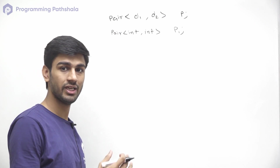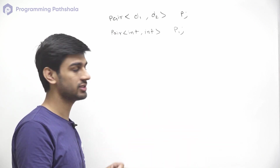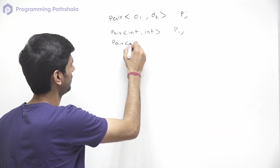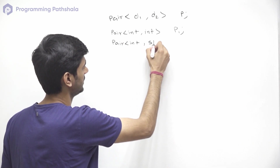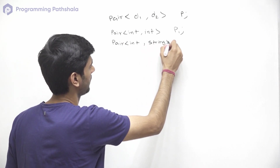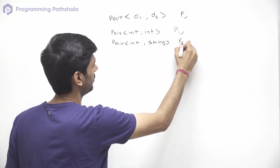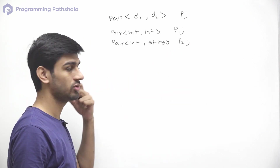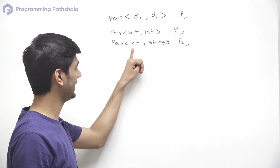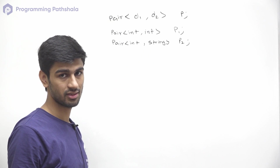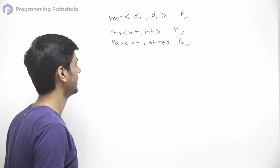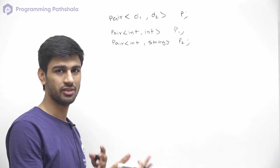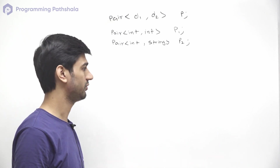If we want a pair of an integer and a string, we can declare that as int, string and name it P2. So this P2 pair can store two objects — one with integer data type and the other with string data type. Similarly, we can declare pairs with different combinations of objects.